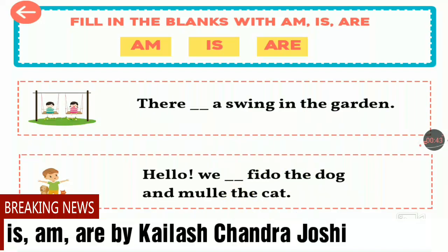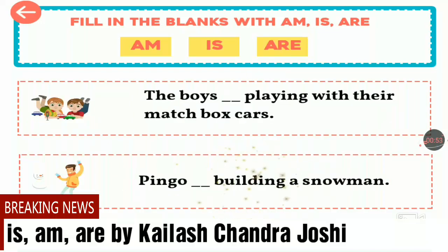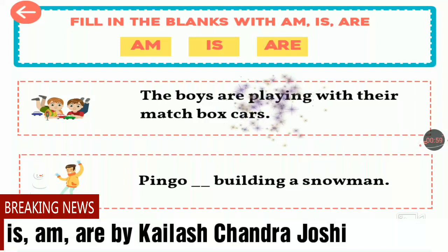There is a swing in the garden — 'are' is not right here, 'is' is correct. Hello, we are fighters! The dog and the boys — boys are plural — so 'are' is right: the boys are playing with their matchbox.